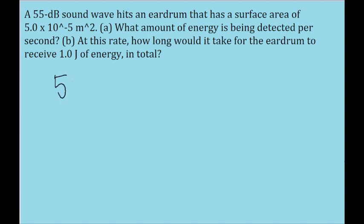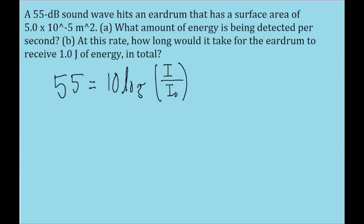We have a formula that relates the sound level of a sound wave to its intensity. It states that the sound level is equal to 10 times the log, with a base of 10, of the ratio of the intensity of the wave to I₀, the constant. So let's solve this for I. First, let's divide both sides of the equation by 10.